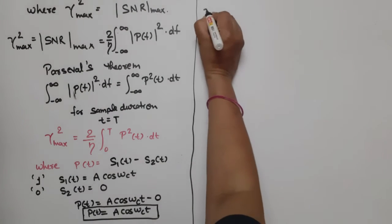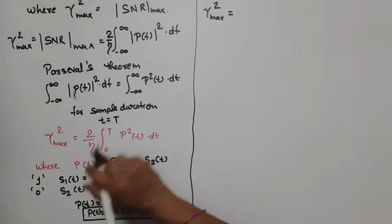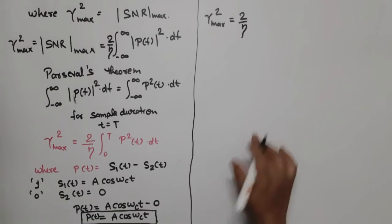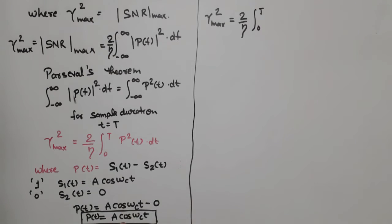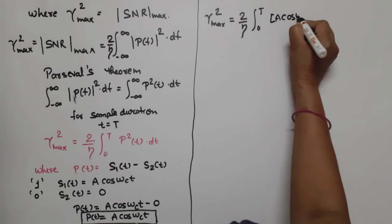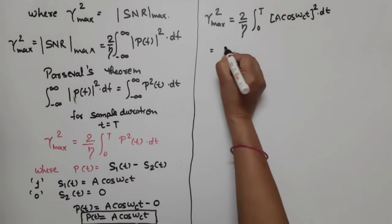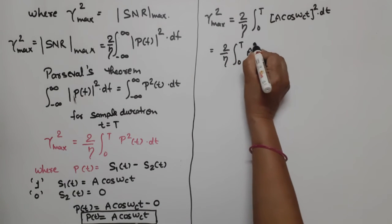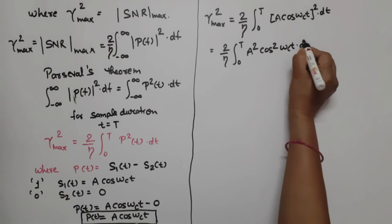So what will happen? Gamma-max squared is equal to 2 divided by eta, with integration from 0 to T of P²(t) dt. Substituting our value, this becomes 2 divided by eta times the integral from 0 to T of A·cos(ωct) squared dot dt, which equals 2 divided by eta times the integral from 0 to T of A² cos²(ωct) dot dt.